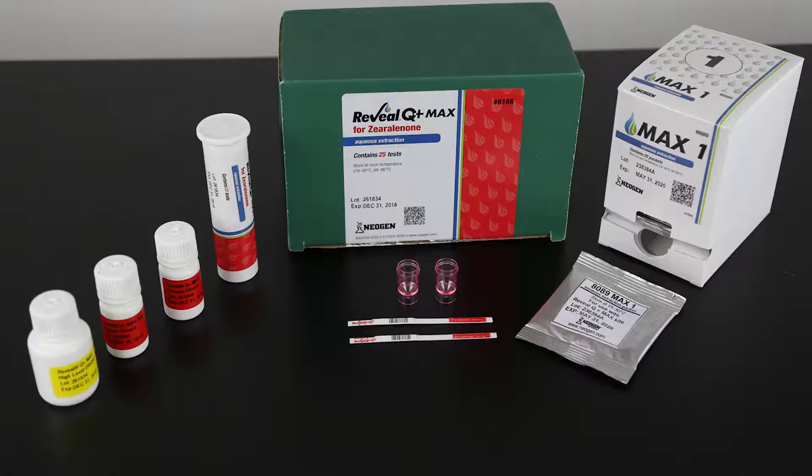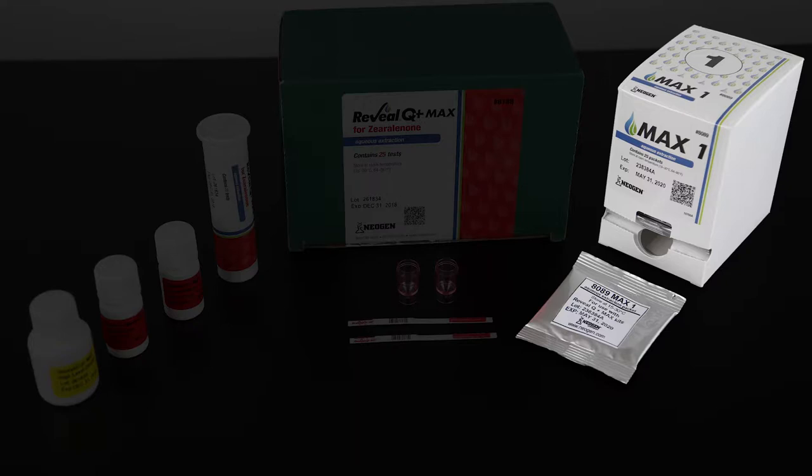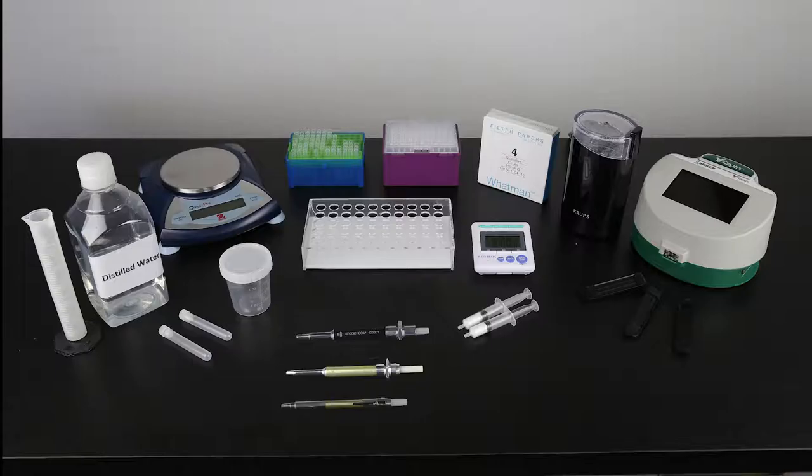Each kit contains supplies to test 25 samples. The kit includes test strips, red dilution cups, two bottles of sample diluent, one bottle of dilution buffer, and one box of MAX-1 aqueous extraction packets.